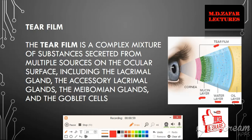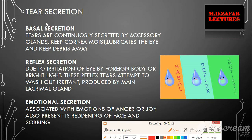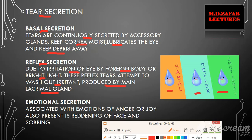Regarding tear secretion, there are three basic mechanisms: basal secretion, reflex secretion, and emotional secretion. Basal secretion is the continuous secretion of tear film which keeps the cornea moist, lubricates the eye, and keeps debris away — produced by the accessory lacrimal glands. Reflex secretion occurs due to irritation by a foreign body or bright light; these reflex tears attempt to wash off the irritant and are produced by the main lacrimal gland. Emotional secretion is associated with emotions such as anger or joy, and is accompanied by reddening of the face and sobbing — features absent in both reflex and basal secretion.